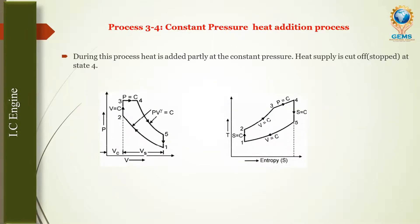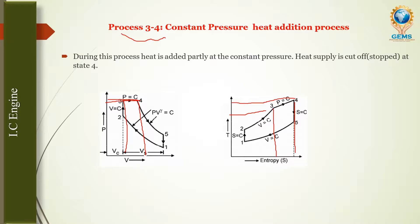In process 3 to 4, we are going to add heat at constant pressure, so pressure remains constant. If we add heat, the temperature will also increase and entropy will also increase. Volume will also increase during this constant pressure heat addition process.